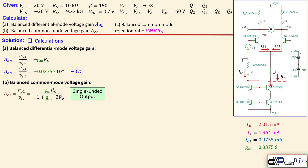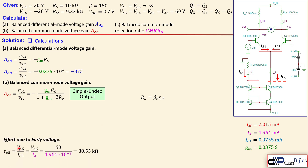The output resistance Ro looking into the collector of Q5 in the cascode configuration is beta of Q5 times the dynamic output resistance ro5. For ro5, we use the Early voltage divided by the DC collector current of Q5, which is Ix. Substituting 60 volts Early voltage divided by Ix gives ro5 equal to 30.55 kilohms. Then Ro equals 150 times 30.55 kilohms, which is approximately 4.6 megohms — quite high. This is one improvement over the Wilson current source, which had an output impedance two times smaller.